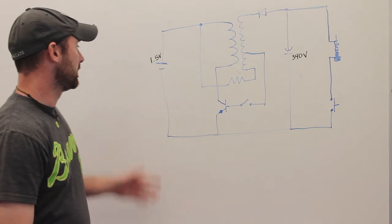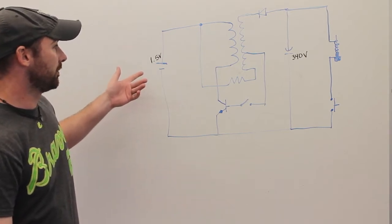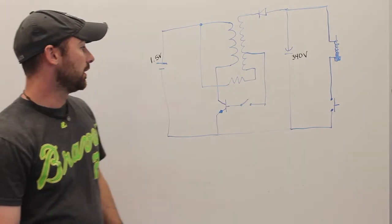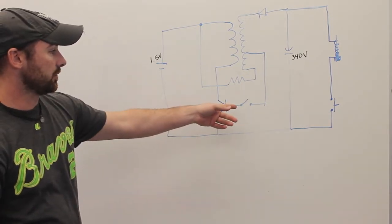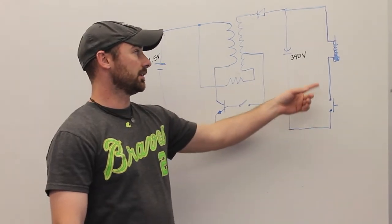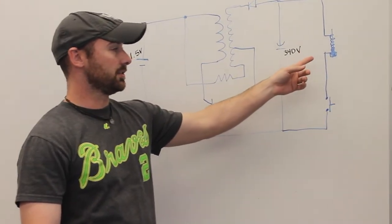This is the circuit diagram for a coil gun. As you can see, we start off with 1.5 volts and it's stepped up to a total of 340 volts. Right here is the toggle switch that charges the capacitor, and this is the push button that discharges the capacitor and shoots the coil gun.